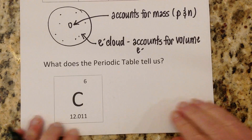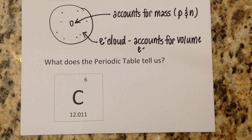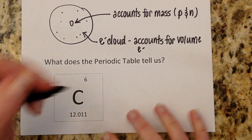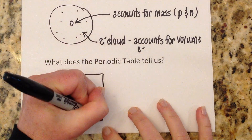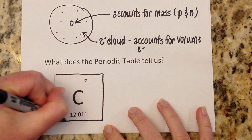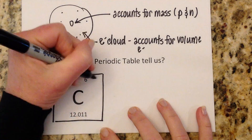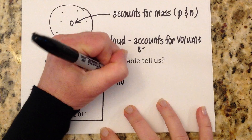When we look at the periodic table, we can get some very valuable information about all sorts of things. But today we're looking at it in terms of counting our protons, neutrons, and electrons. This is a typical element from the periodic table — this is carbon. You can see that carbon has an atomic number of 6. This is the atomic number.